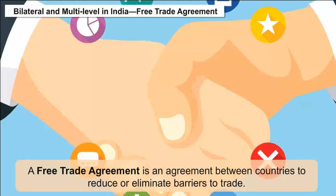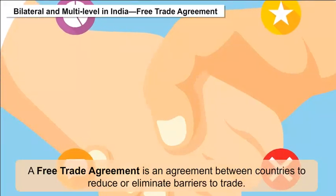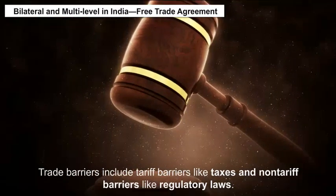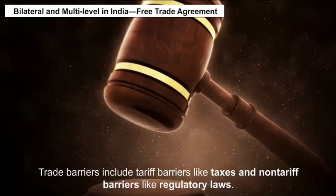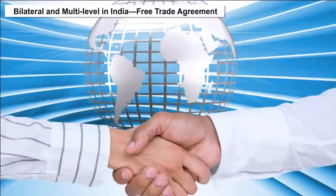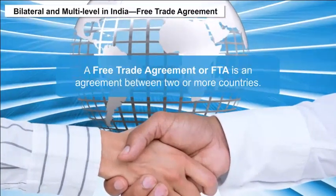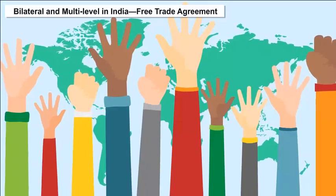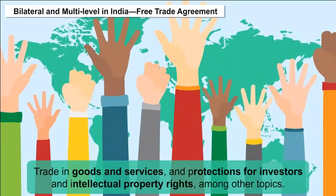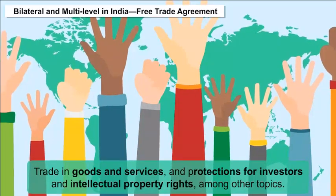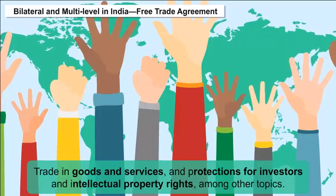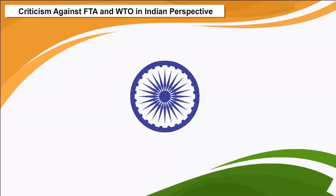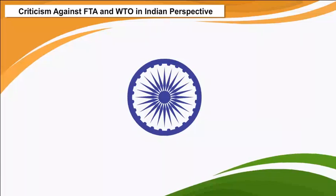Bilateral and Multi-level Free Trade Agreements: A Free Trade Agreement (FTA) is an agreement between countries to reduce or eliminate barriers to trade. Trade barriers include tariff barriers like taxes and non-tariff barriers like regulatory laws. An FTA is an agreement between two or more countries where the countries agree on certain obligations affecting trade in goods and services, and protections for investors and intellectual property rights.